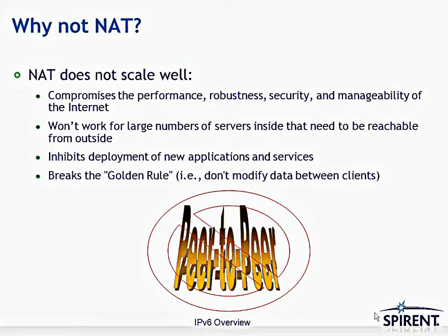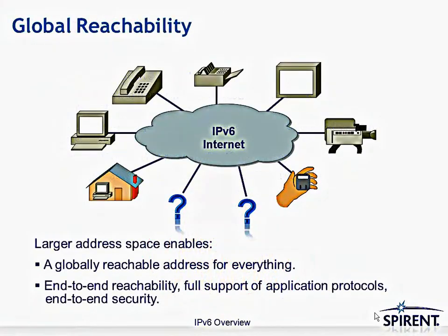One of the big issues with IPv4 is network address translation (NAT), the main strategy used to extend IPv4's useful life. But the biggest problem with NAT is that it breaks the golden rule — it modifies data between clients. For true peer-to-peer applications, you need a protocol that scales like IPv6 with enough addresses to assign a native public IPv6 address to every interface. That means global reachability for every type of device — a refrigerator, a light switch, a PC, or a server — supporting future applications as well.